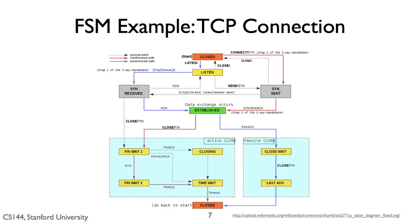A passive opener is a listener — it's a server. It listens for requests for connections from active openers, or clients. So when a program calls listen, the socket transitions from the closed state to the listen state. The protocol takes no actions when this happens; it doesn't send any messages. If the server calls close on the socket when it's in the listen state, it transitions immediately to the closed state. Let's walk through the three-way handshake, starting with the first step, when a client tries to open a connection and sends a SYN packet to the server.